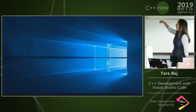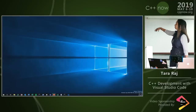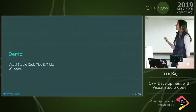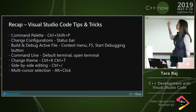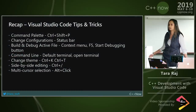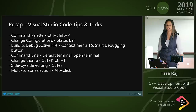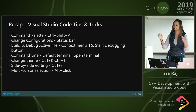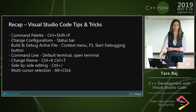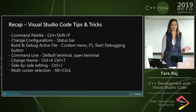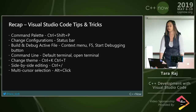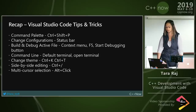To recap, these are the shortcuts I just showed: command palette, change your configuration, build and debug active file, some of the command line stuff. This was essentially the high-level overview of some of the Visual Studio Code things. Now I want to dig in a little bit deeper into some of the more advanced stuff.